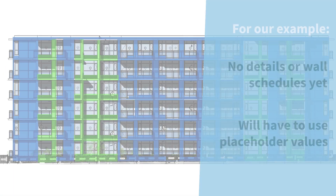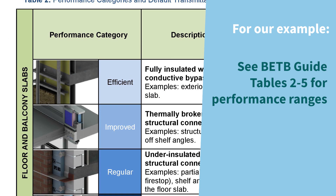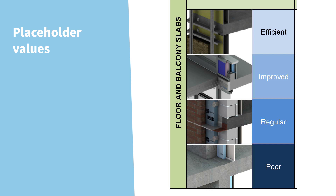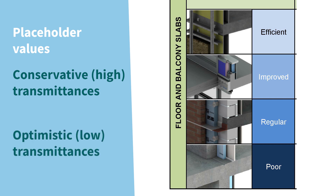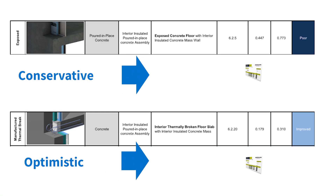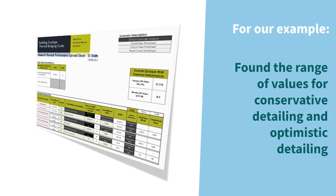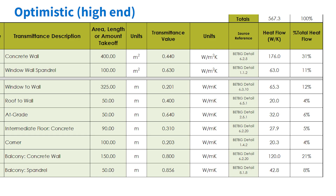At this early stage, we will only have placeholder values, so we can consult tables 2 to 5 in the BETB guide for default transmittances, or the visual summary in Appendix B. Since there are many options, it's up to you whether you want to provide pessimistic placeholder values to establish a worst-case scenario, or more optimistic transmittances that represent efficient details, with the expectation that the design will incorporate that type of detailing. Better yet, you can do both to show the range of what U values can likely be achieved. In our example, we made two spreadsheet calculations to find the top-end and bottom-end overall U values based on the conventional and efficient detailing.